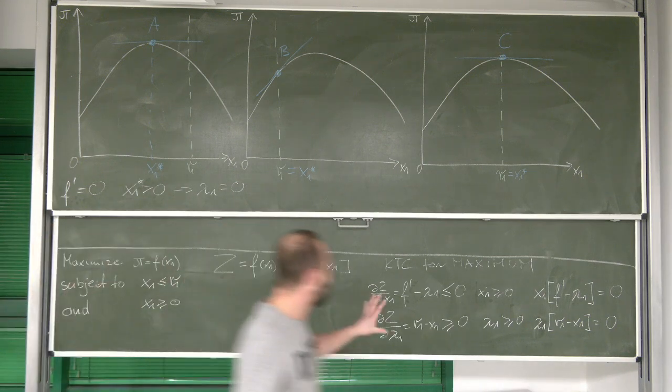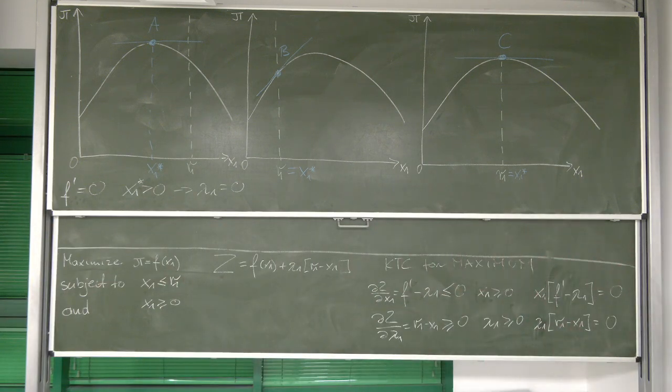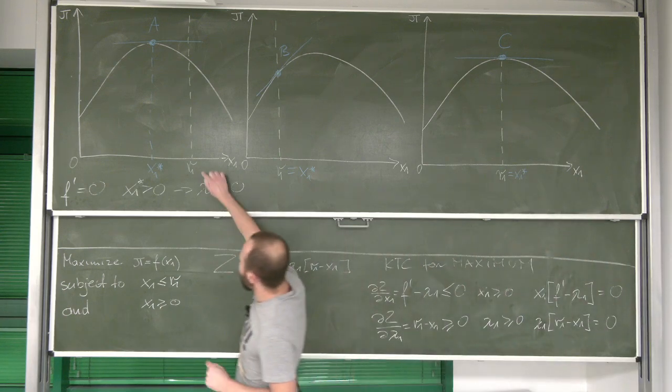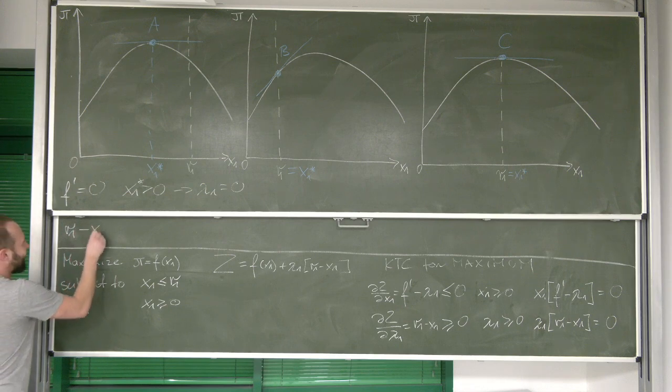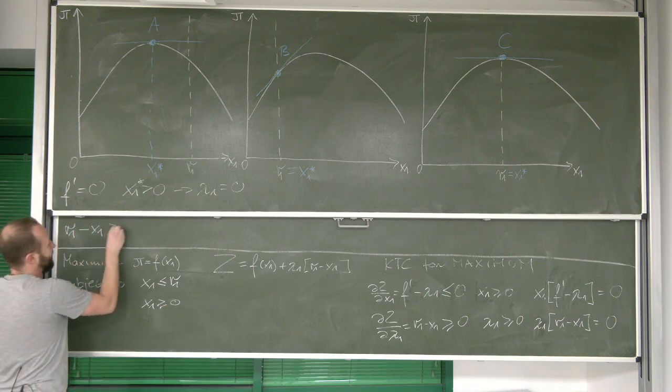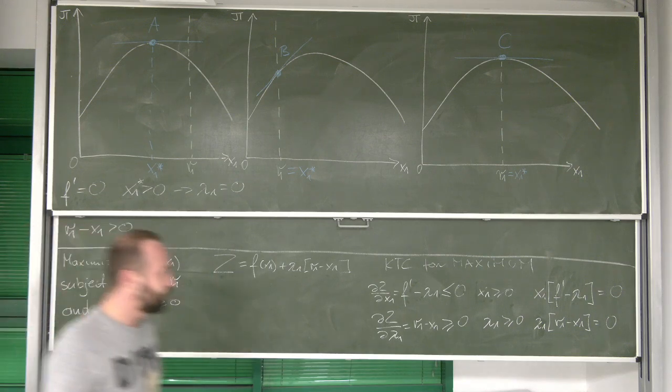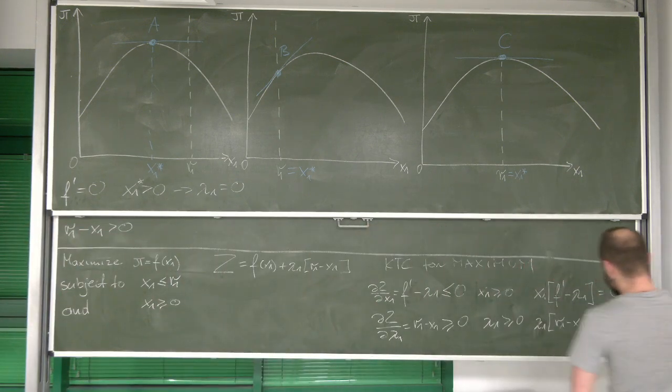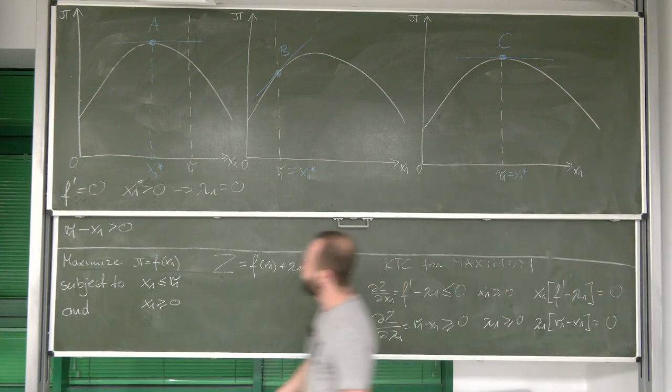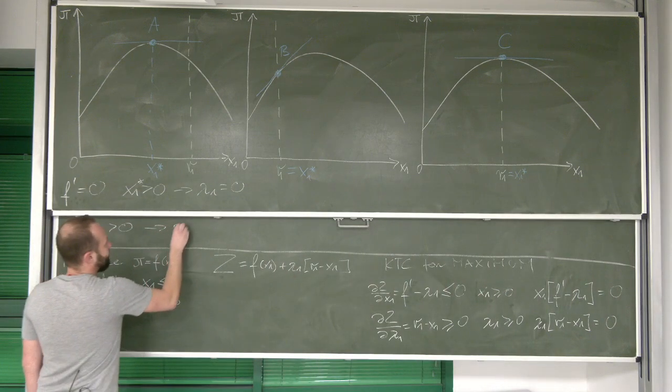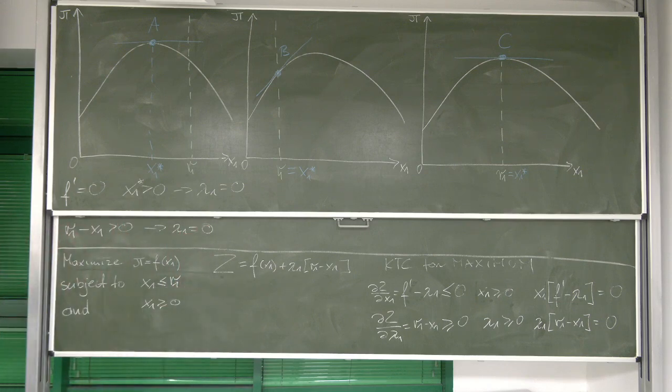However, we see a little bit more. Look, we can also see that r1 is bigger than x1. Well, this implies that r1 minus x1 is bigger than zero. And again, due to complementary slackness, right, if this is bigger than zero, it means that our lambda, in fact, needs to be equal to zero.